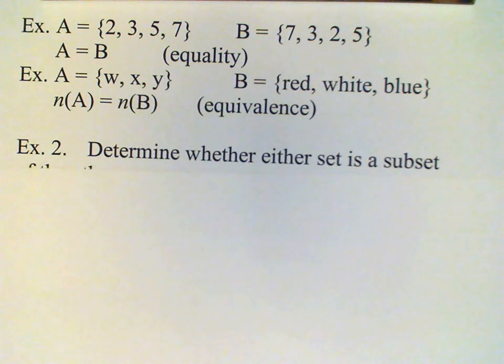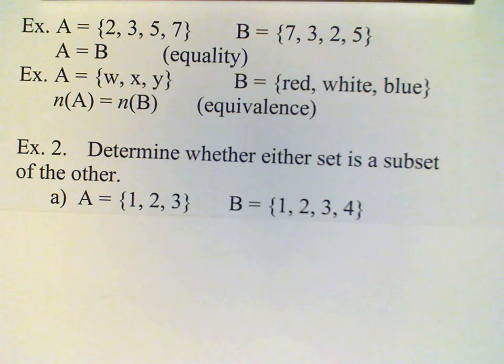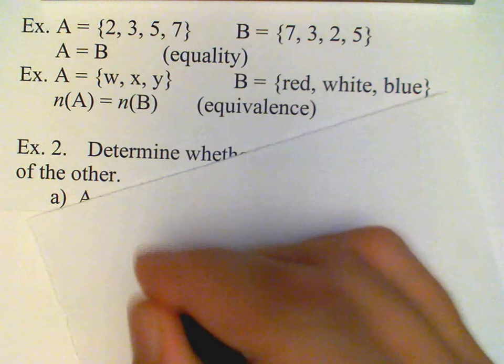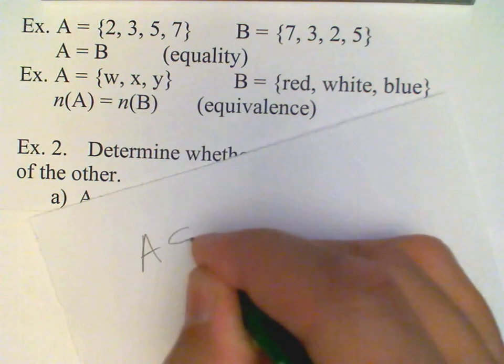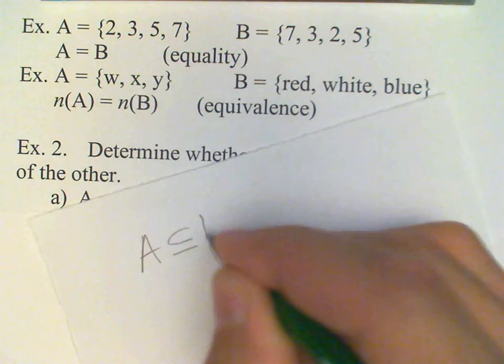Next example, we need to determine whether each set is a subset of the other set. First, if A is a set consisting of elements 1, 2, and 3, and B consists of 1, 2, 3, and 4, then clearly A is a subset of B. So we will write A is a subset of B.